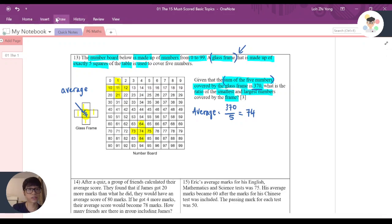And of course, the question now is asking for the smallest and largest number. So the smallest number that cover is actually 64. And the largest number that cover is 84.